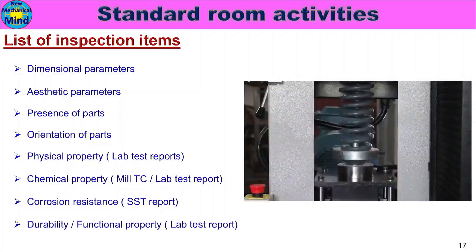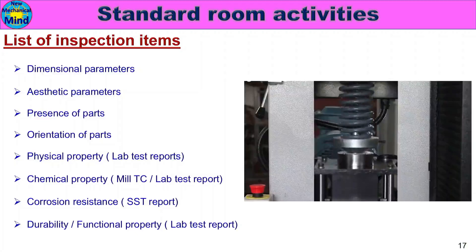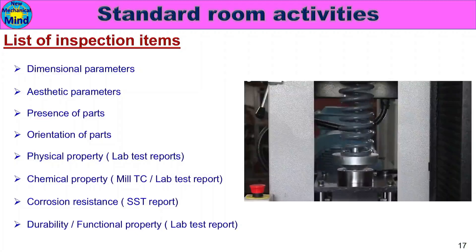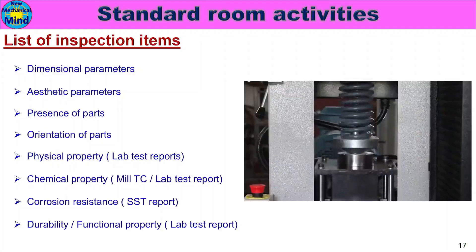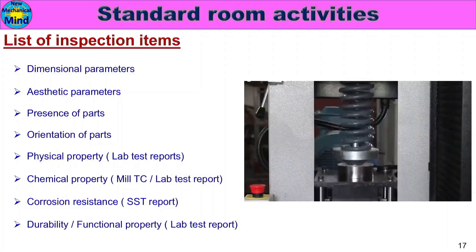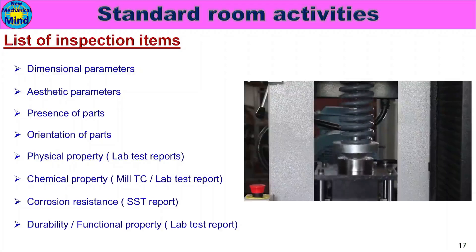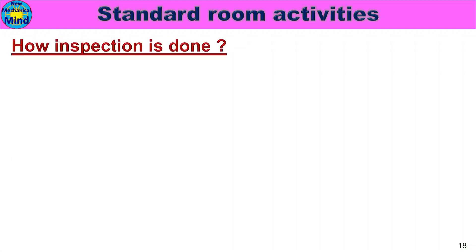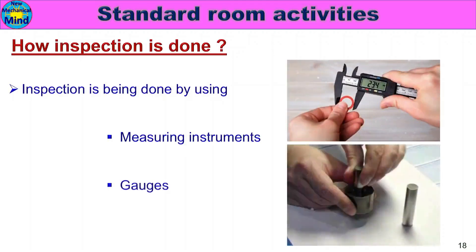Durability or functional property — checked via lab test reports or measuring instruments. The product parameter values are assigned and verified using measuring instruments and gauges.